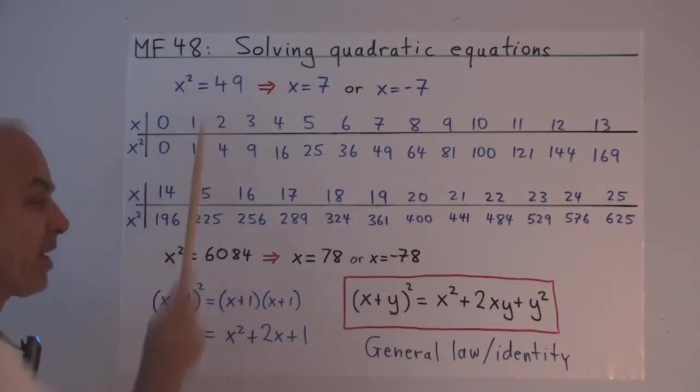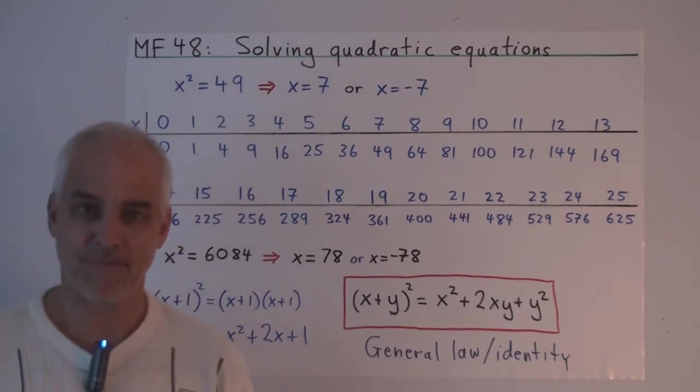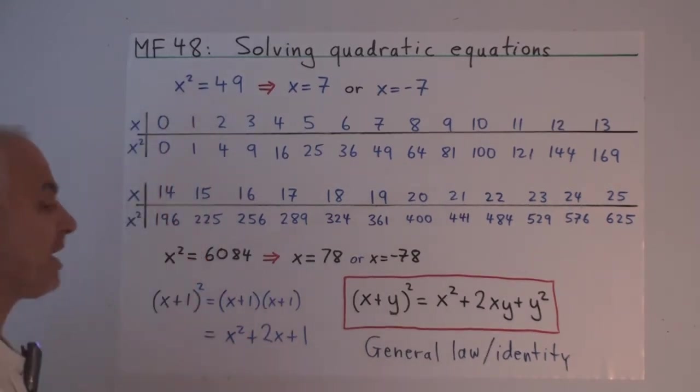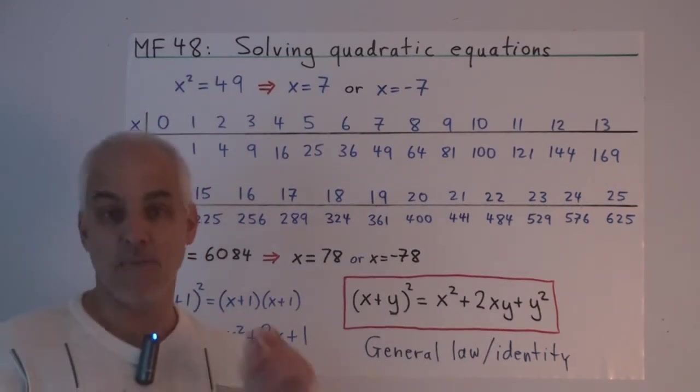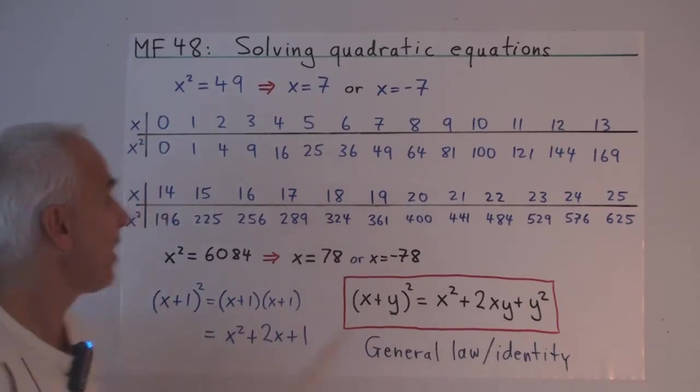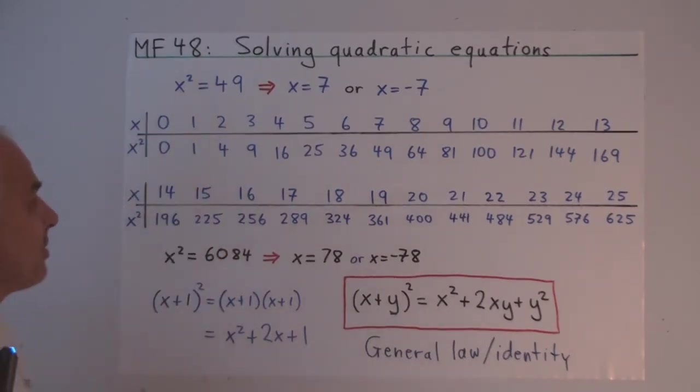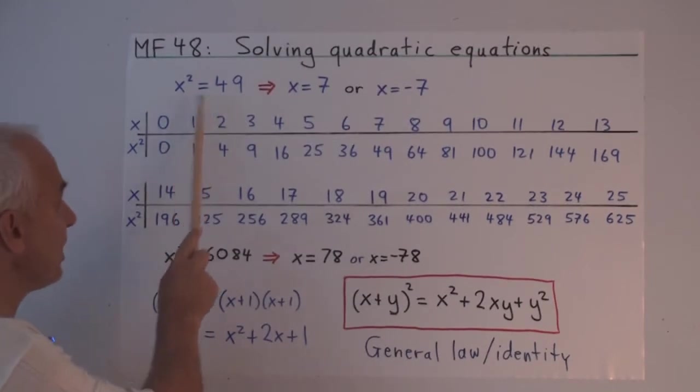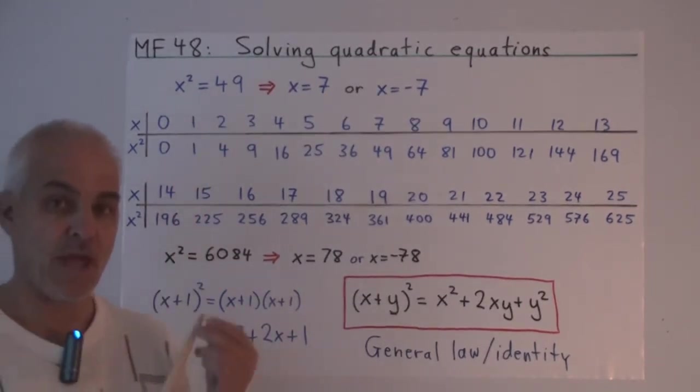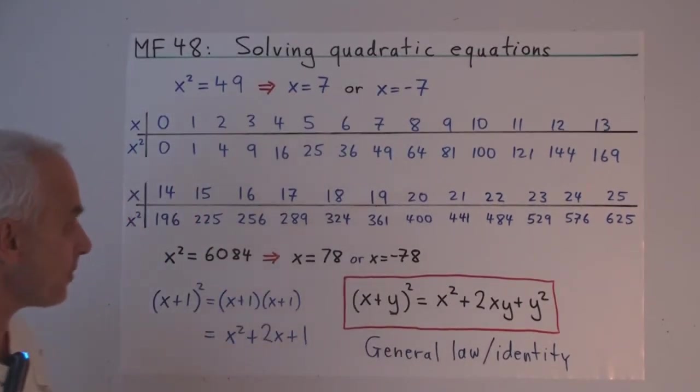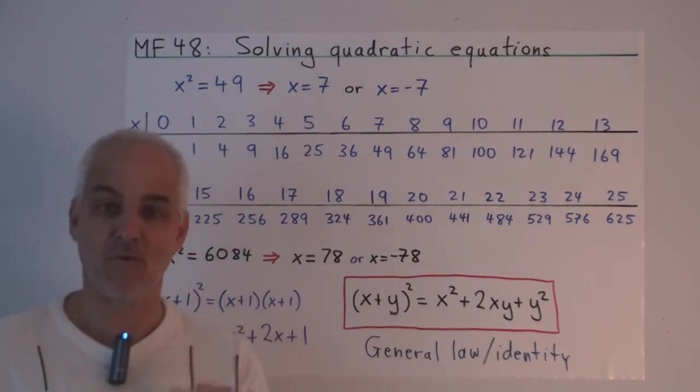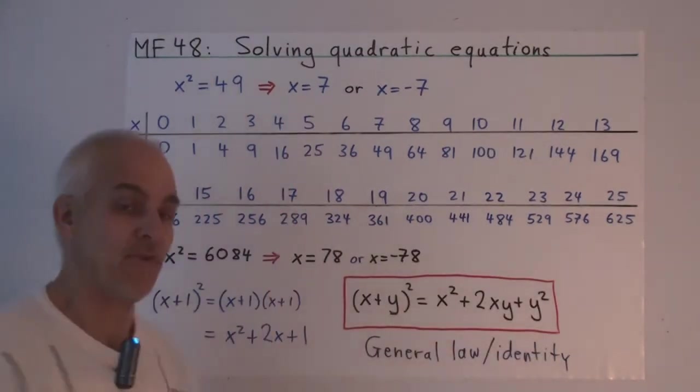Suppose that we have the equation x squared equals 49. What does x squared mean? It means x times x. That's called the squaring operation. So we'd like to know what is the solution to this equation? What can x be? Well, if you know your multiplication table, you'll know that 7 times 7 is 49. So there's the solution. x equals 7.